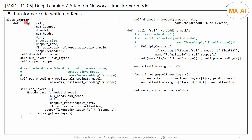Modify this to multiply by the square root of D model. Next, we modify the encoder class. As with the decoder, we remove the vocab size argument and the word embedding, and modify the multiply constant class.